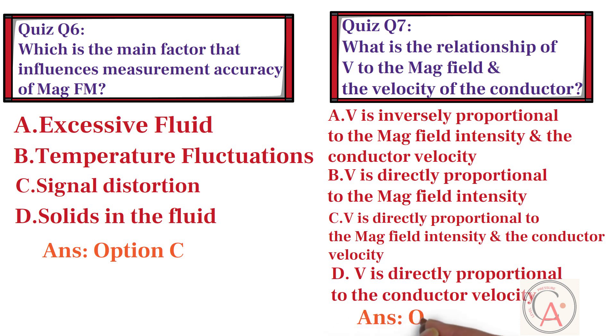The correct answer is option C — voltage is directly proportional to the magnetic field intensity and the conductor velocity.